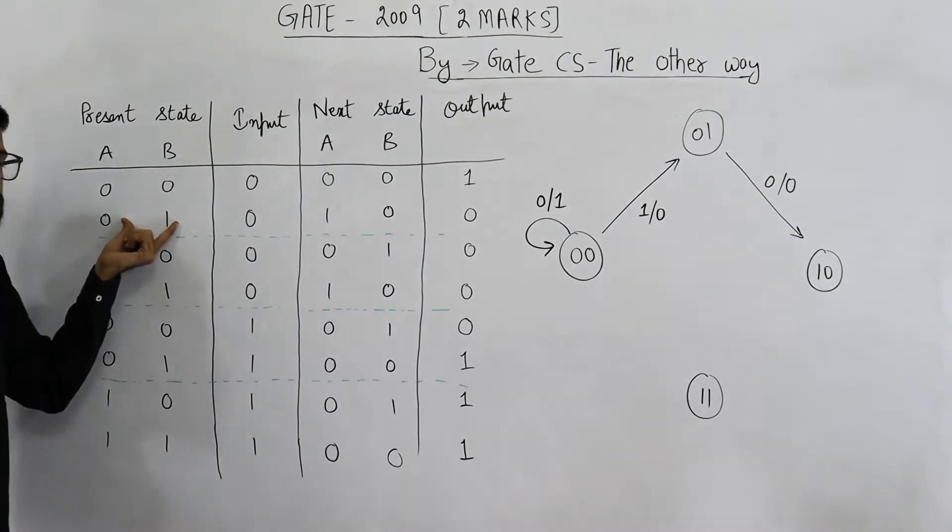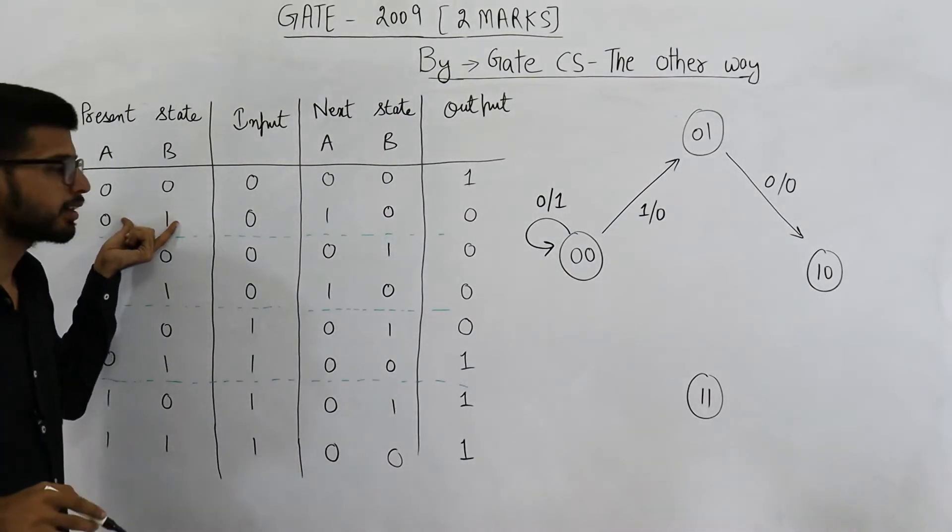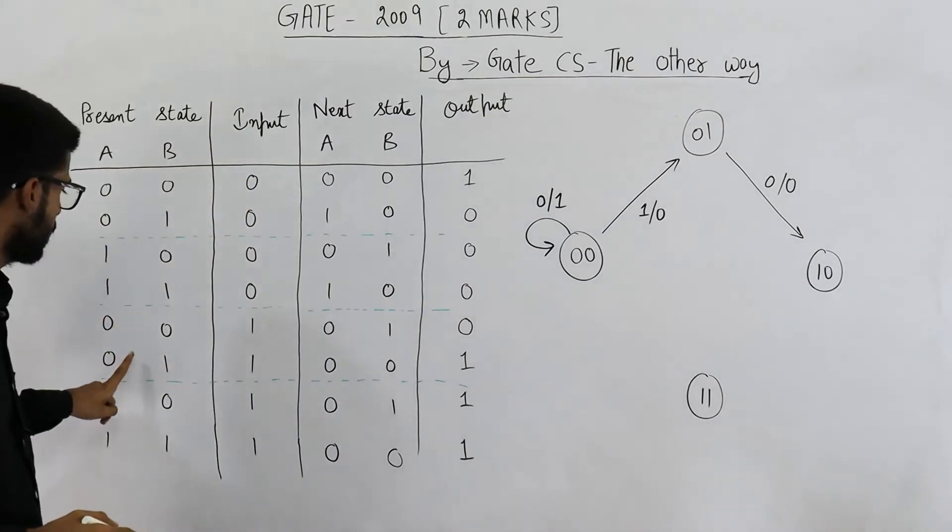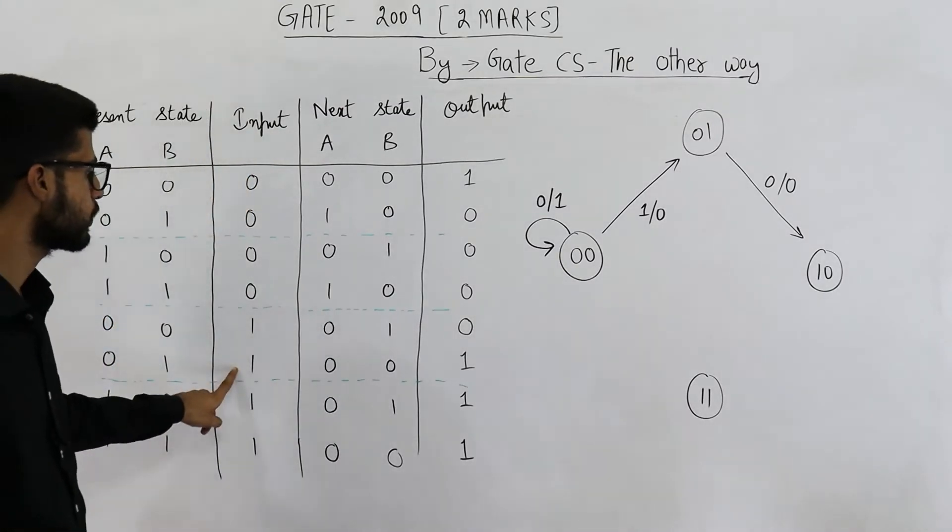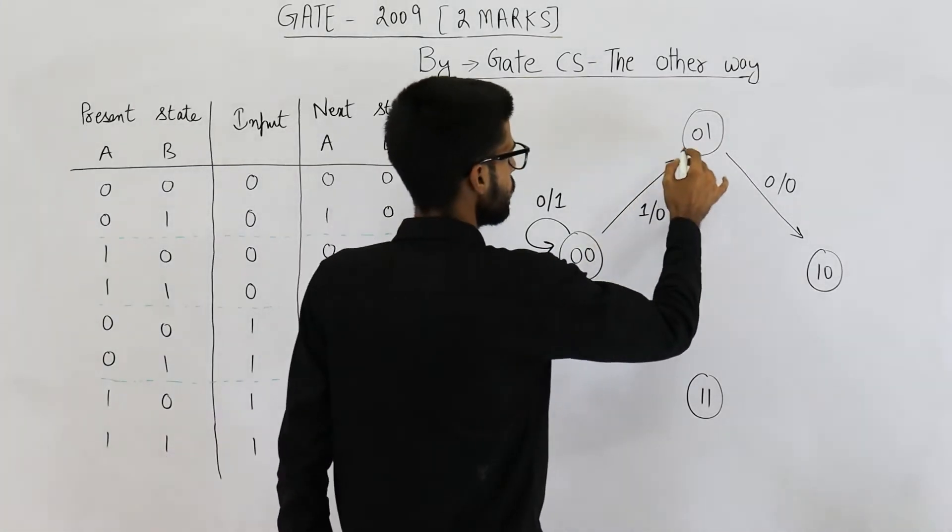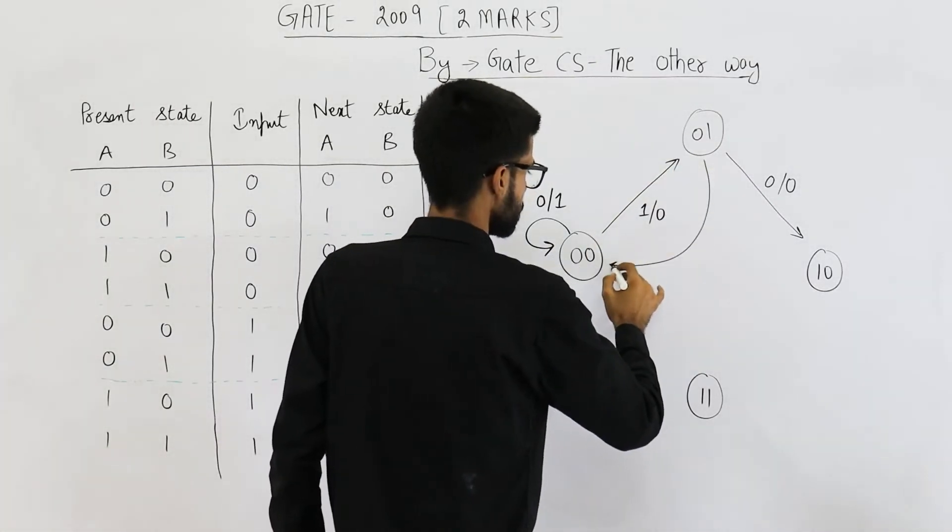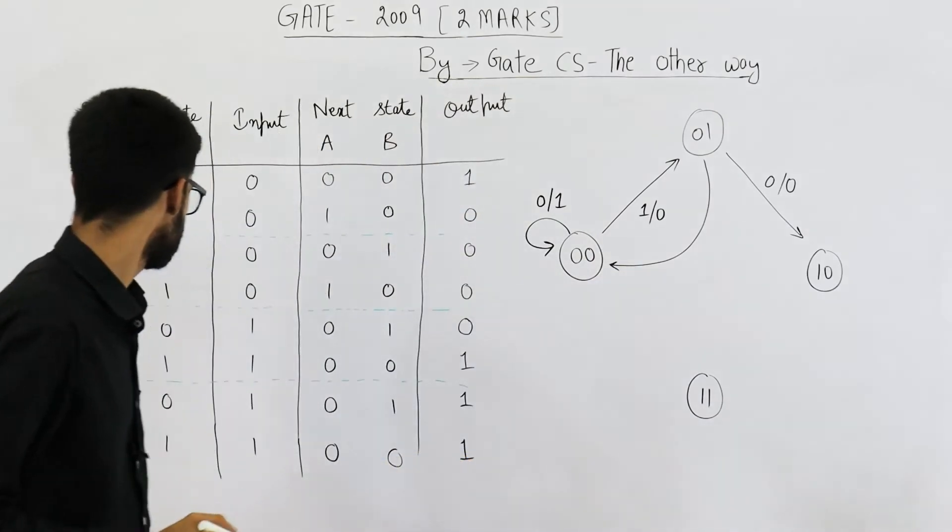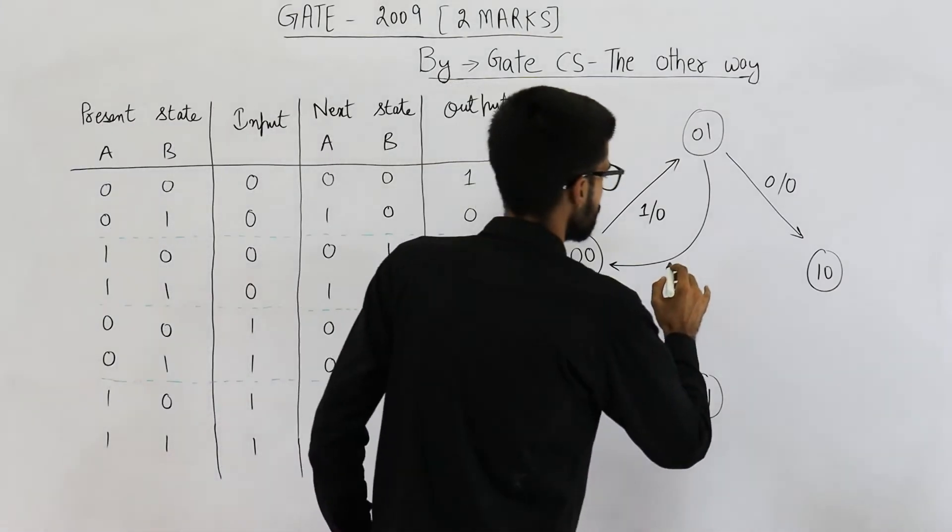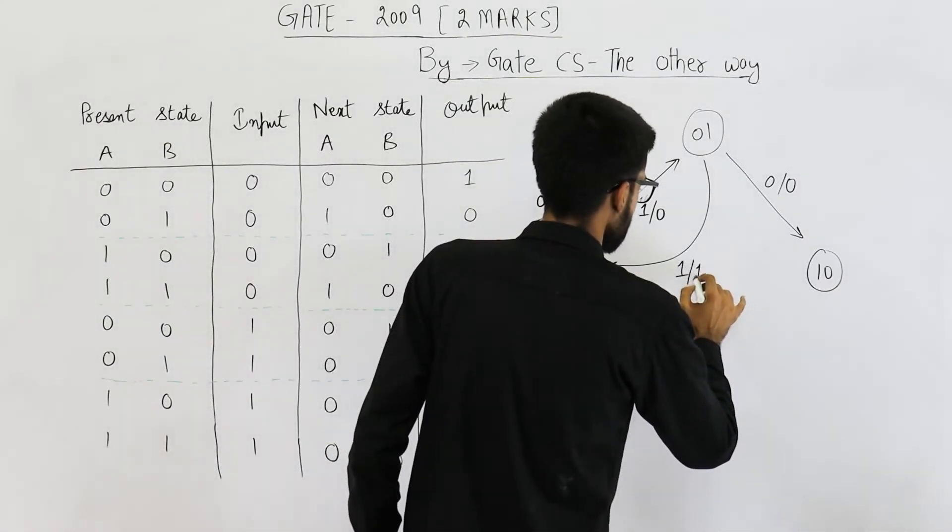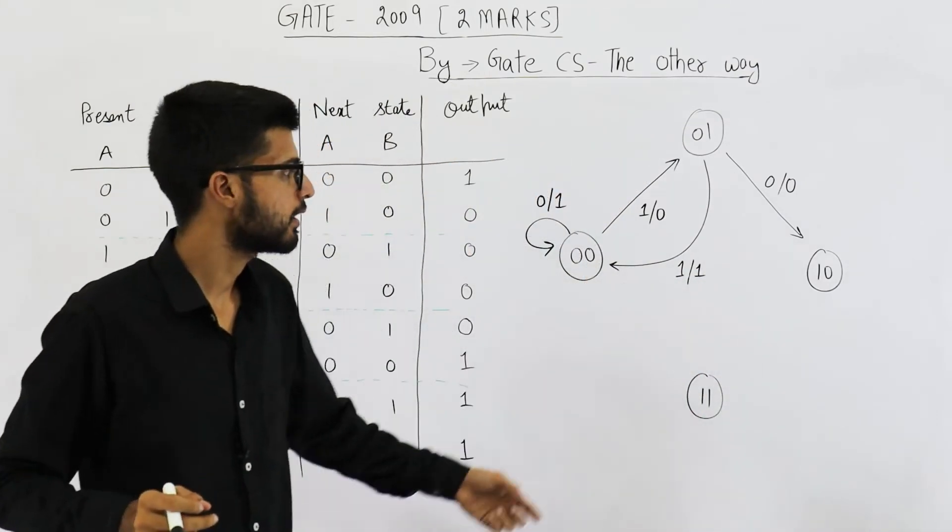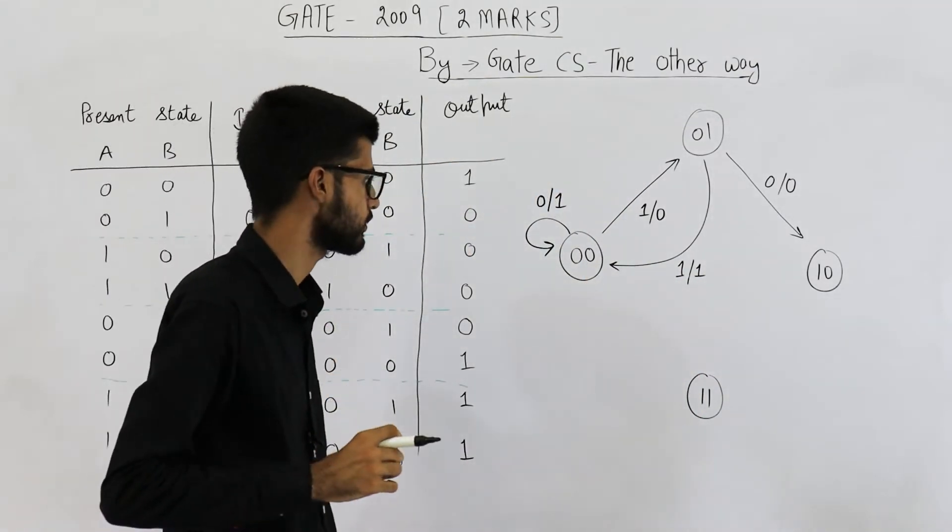Now let's see what happens if the state currently is 0,1 but input bit is 1. So we have 0,1 and input=1. It will go to state 0,0 only. So it's like this. Input is also 1, output is also 1. So 1 slash 1. So now let me complete this entire diagram and then I'll explain what is the answer.